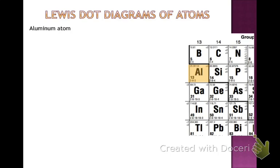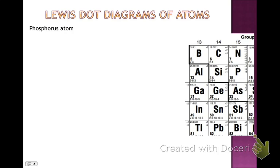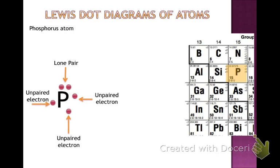Go ahead and pause and draw the aluminum atom. Aluminum is in group 13, so it should have 3 valence electrons, and each of those 3 valence electrons are unpaired. Now draw phosphorus. Phosphorus is in group 15, so it should have 5 valence electrons. Label the lone pairs and unbonded pairs — we have one lone pair and then 3 unpaired electrons, available to be shared with other non-metals. For ionic compounds, those spots are where metal electrons can be transferred in.